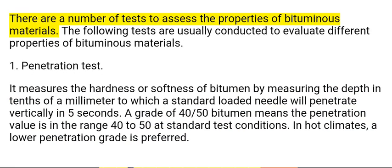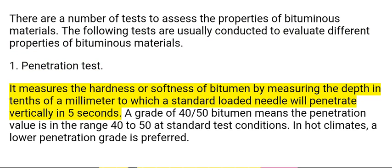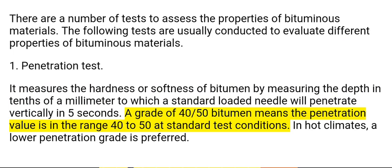Tests on Bitumen. There are a number of tests to assess the properties of bituminous materials. 1. Penetration test. It measures the hardness or softness of bitumen by measuring the depth in tenths of a millimeter to which a standard loaded needle will penetrate vertically in 5 seconds. A grade of 40-50 bitumen means the penetration value is in the range 40-50 at standard test conditions. In hot climates, a lower penetration grade is preferred.